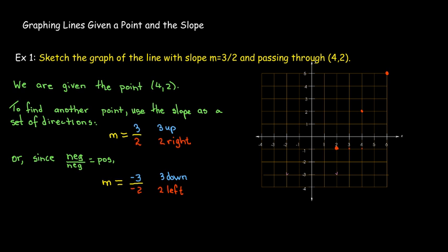And I could even do that again. 1, 2, 3 down, 2 to the left. So now all of those clearly lie on the same line. Let me go ahead and draw a line through those then. Remember to put arrowheads on it. And there we go. So given a starting point and the slope, we can always use the slope as a set of directions to find more points on the line.